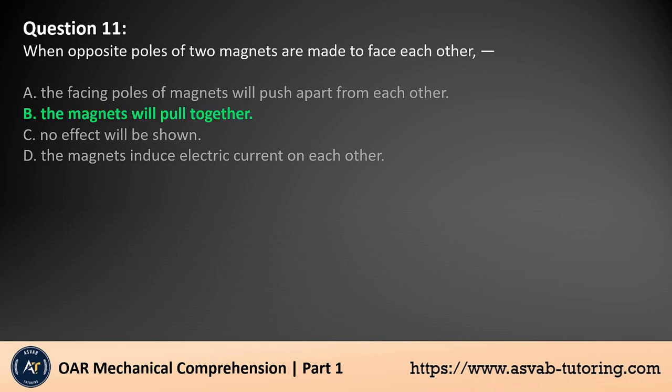The answer is B. When opposite poles of two magnets are brought close to each other, they attract each other, causing the magnets to pull together. This is due to the magnetic field lines flowing from the north pole of one magnet to the south pole of the other, creating an attractive force between them. This attraction is a fundamental property of magnets.